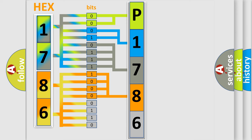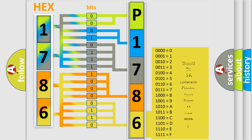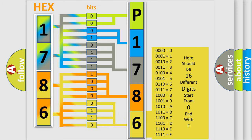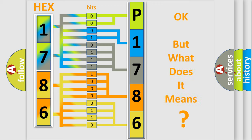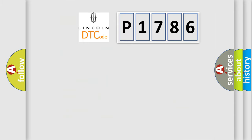A single byte conceals 256 possible combinations. We now know in what way the diagnostic tool translates the received information into a more comprehensible format. The number itself does not make sense to us if we cannot assign information about what it actually expresses. So, what does the diagnostic trouble code P1786 interpret specifically for Lincoln car manufacturers?